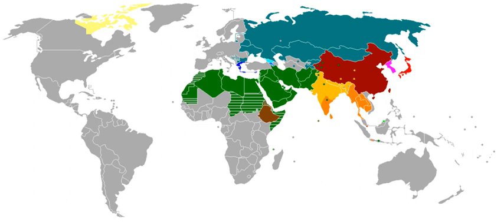It is generally agreed that Sumerian writing was an independent invention; however, it is debated whether Egyptian writing was developed completely independently of Sumerian, or was a case of cultural diffusion. A similar debate exists for the Chinese script, which developed around 1200 BC. Chinese script is probably an independent invention, because there is no evidence of contact between China and the literate civilizations of the Near East, and because of distinct differences between the Mesopotamian and Chinese approaches to logography and phonetic representation. The pre-Columbian Mesoamerican writing systems, including Olmec and Maya scripts, are generally believed to have had independent origins. A hieroglyphic writing system used by pre-colonial Mi'kmaq, observed by missionaries from the 17th to 19th centuries, is thought to have developed independently, although there is some debate over whether this was a fully formed system or just a series of mnemonic pictographs.